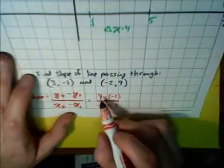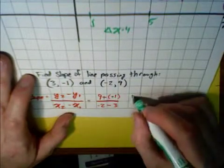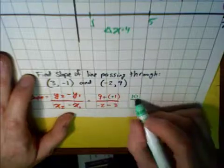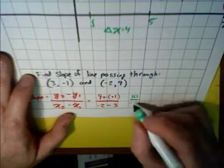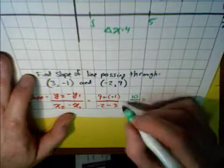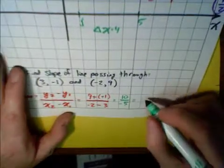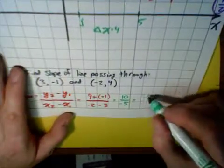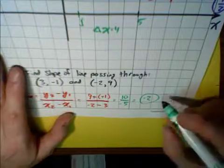Let's do the math. 9 minus negative 1 is a positive 10. These cross, we get a 10. 9 plus 1 is 10. And negative 2 minus 3 is a negative 5. So this simplifies to a negative 2. Final answer for my slope. That's it.